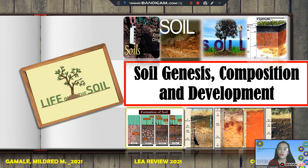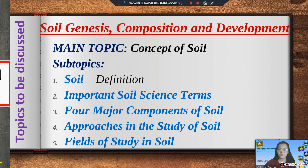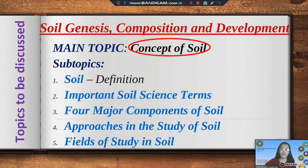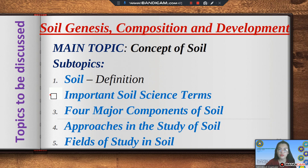Let us continue our topic, which is all about soil genesis, composition, and development. Soil genesis is defined as the study of the origin and formation of soil. Under this topic, we have different subtopics: first, we are going to define what is soil; second, the important soil science terms; third, the four major components of soil; fourth, the approaches in the study of soil; and fifth, the fields of study in soil.